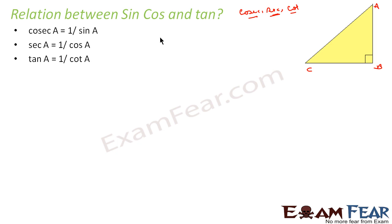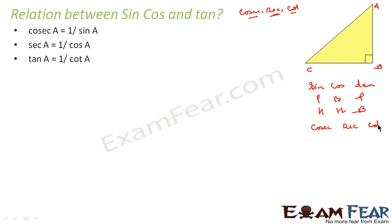To remember these, we know sine, cos, tan — we use the mnemonic 'Pandit Badri Prashad Hare Hare.' Now you also write cosec, sec, cot alongside. So sine is always 1 by cosec, or cosec is always 1 by sine — they are reciprocals of each other; multiply both and you get 1. Similarly, sec is 1 by cos and cot is 1 by tan.